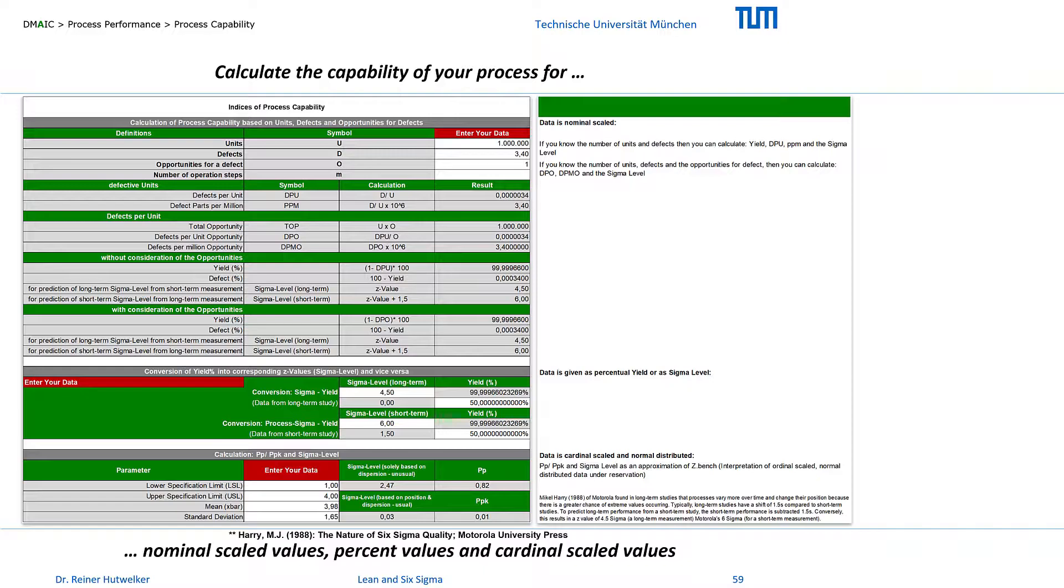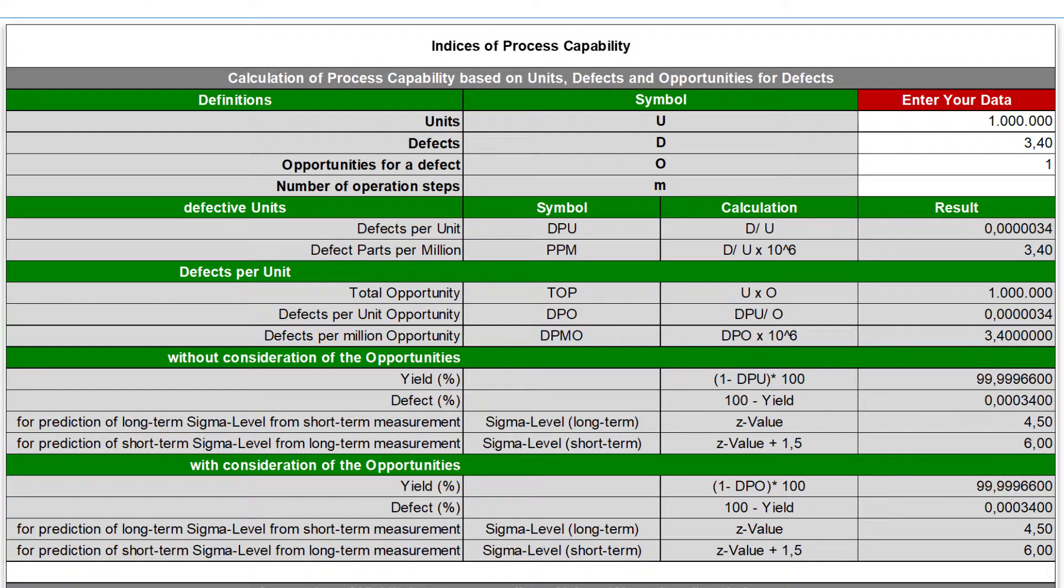Let us next check the process capability of the chocolate cookies. If the data is nominally scaled, for example in defect versus okay, then you can calculate the yield, defects per unit, defect parts per million and the sigma level.